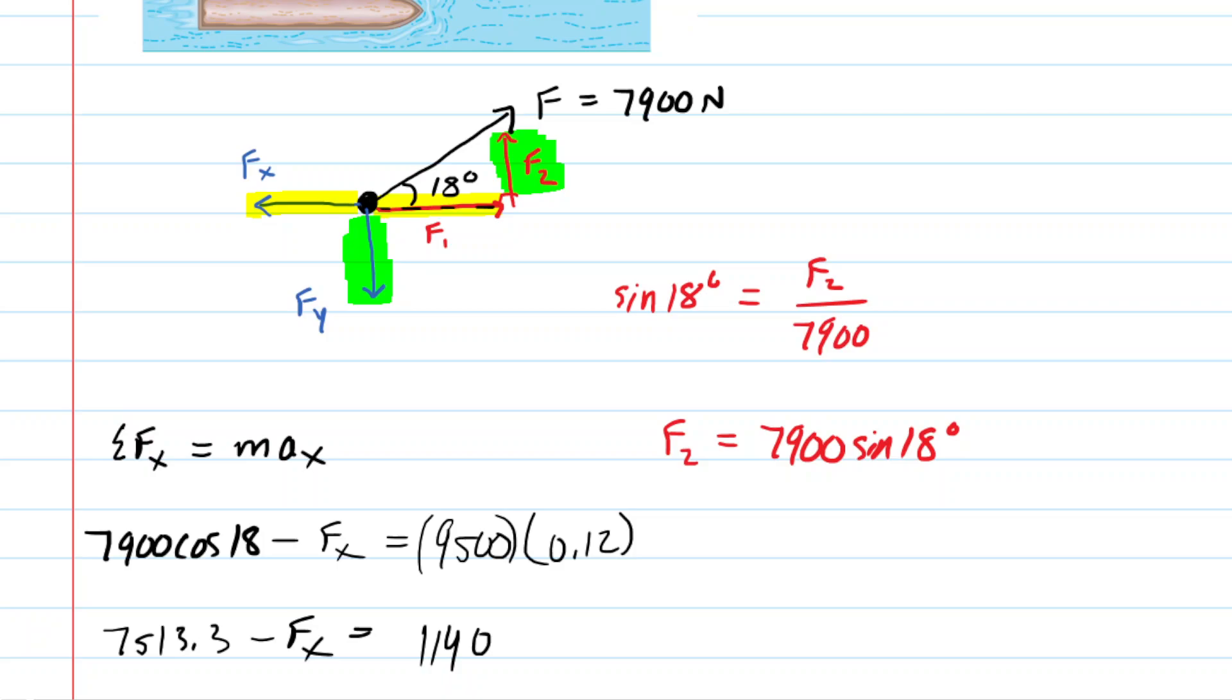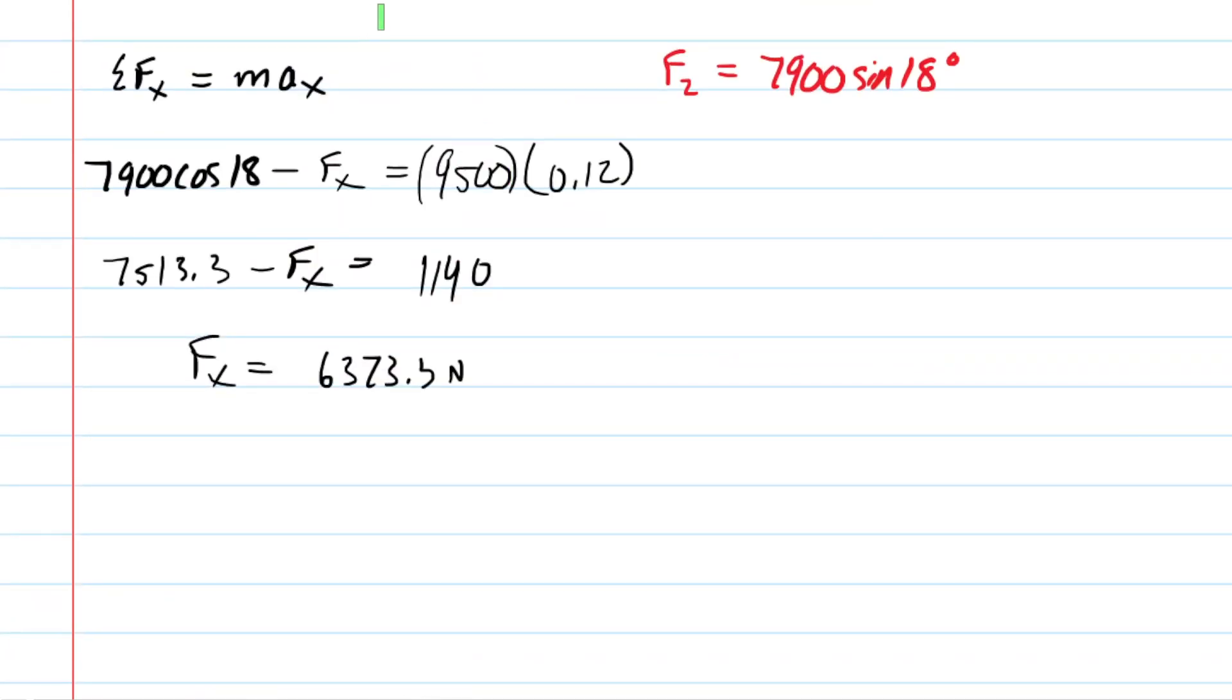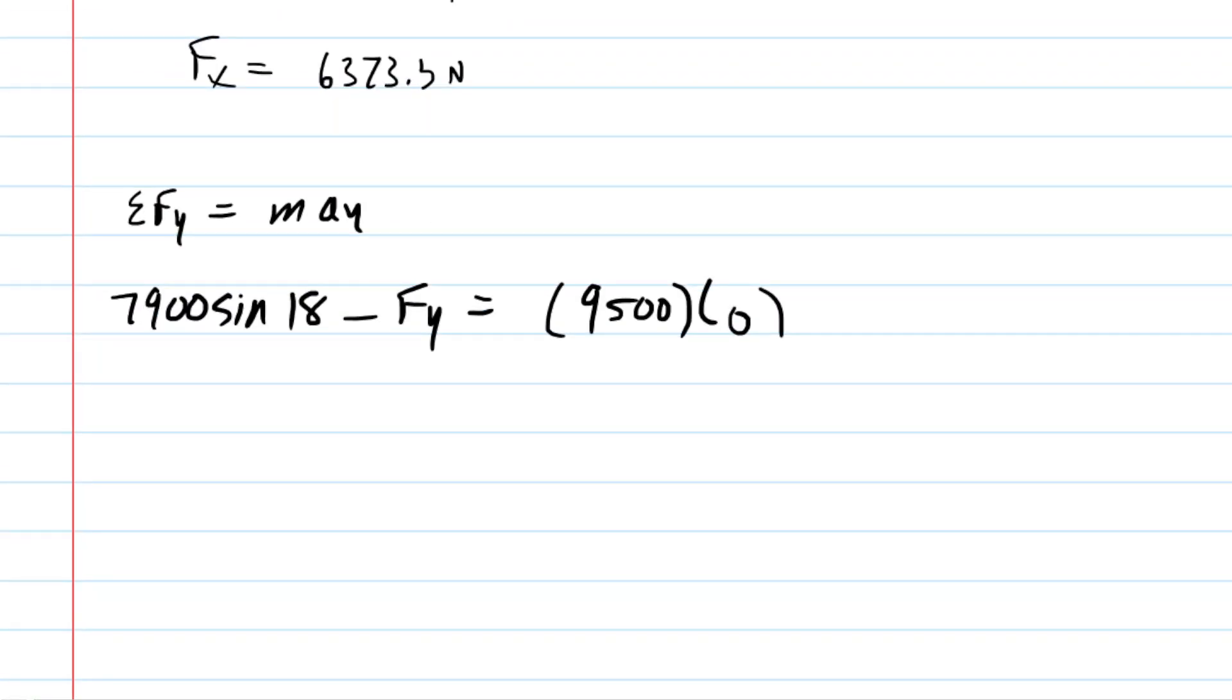So let's go ahead and set up another Newton's second law, this time in the Y direction. We have the sum of the forces in the Y direction equals the mass times the acceleration in the Y direction. We have that positive 7,900 sine of 18, and then minus Fy. And this equals the mass of the barge times the acceleration in the Y direction, which you will recall was 0. So 7,900 times the sine of 18 is 2441.2, and then the right-hand side is 0. We can see very easily here that Fy is that 2441.2, and that'll be in Newton's. So this is cool.